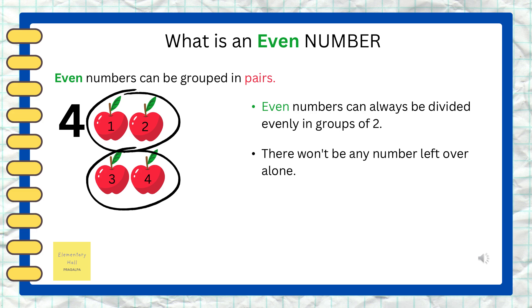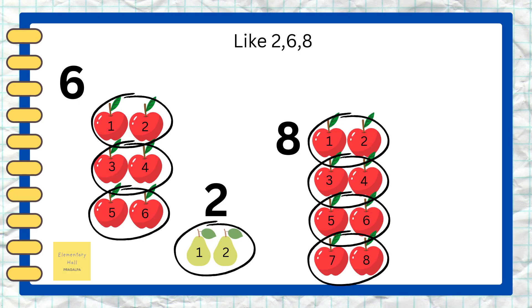One-two, one-two, one-two — there are two apples here and two apples here, they are evenly divided in groups of two. And is there any apple left over alone? No! So number four is an even number.